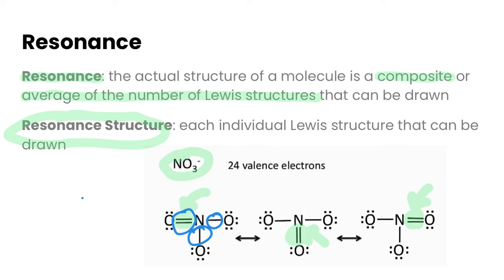So how do we know when we have to draw resonance structures? Well resonance structures really show up mostly when we've got double bonds. And it's when we have one double bond that could occur in multiple places, kind of like our nitrate ion here. So that's something you might need to just keep an eye on as you're drawing out your Lewis structures.